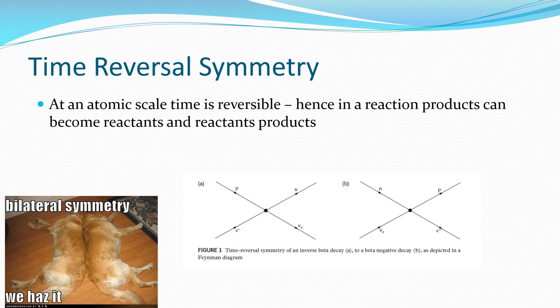All right, time reversal symmetry. On an atomic scale, time is reversible. Hence, in a reaction, products can become reactants and reactants can become products. And that's kind of like what we've been trying to allude to here. And effectively, what we've done here in the diagram on the screen is we had a proton decaying into a neutron. Now we have a neutron decaying into a proton. It's just the opposite reaction there.